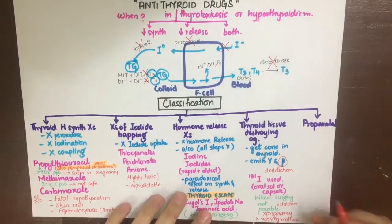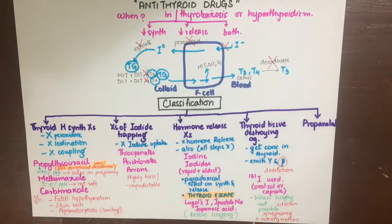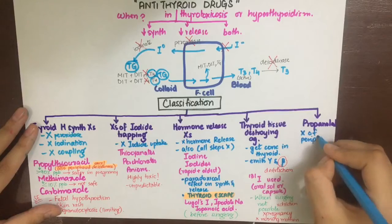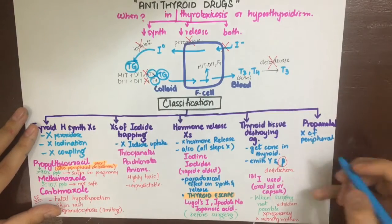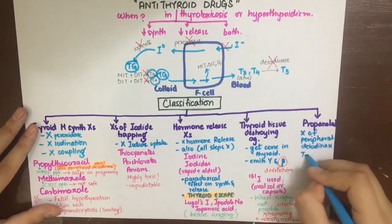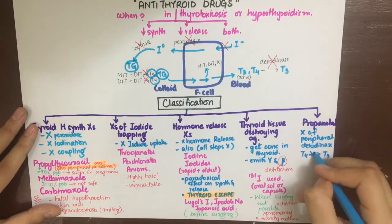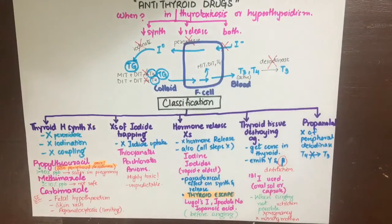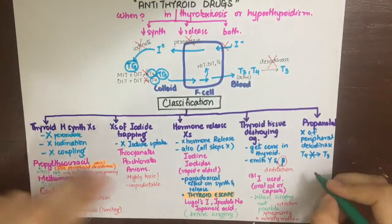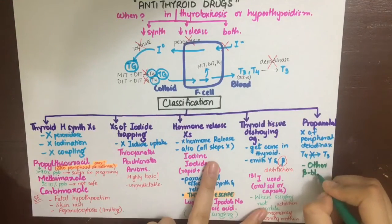Propranolol is an inhibitor of the peripheral deiodinase enzyme and inhibits the conversion of T4 to T3. Other beta blockers can be used for symptomatic treatment — to control tachycardia, palpitations, tremors, etc.